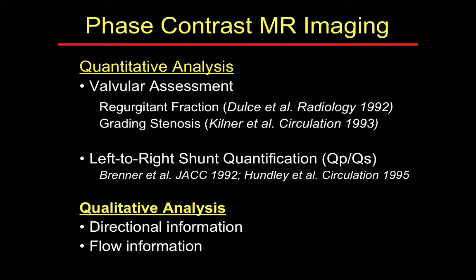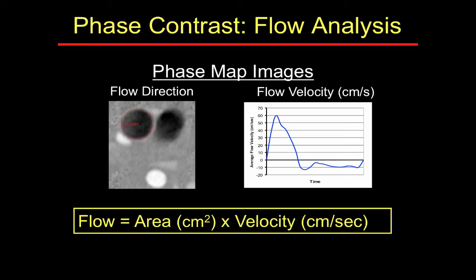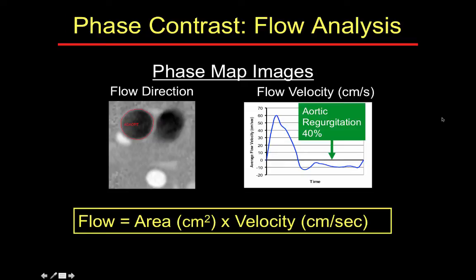Phase contrast has been used for nearly 20 years for a variety of indications. It can be used for valvular assessment, especially for regurgitant fractions or gradient stenosis, and left-to-right shunt quantification — QP/QS ratios. You can also look at the direction of flow to help in complex flow situations. Here's an example of phase contrast flow analysis using a region of interest defining the ascending aorta: you can measure mean velocity across the cardiac cycle and identify a 40% aortic regurgitant fraction as diastolic flow below the zero line going in the reverse direction.